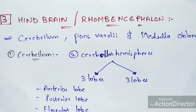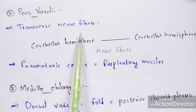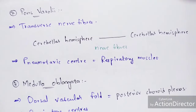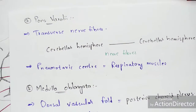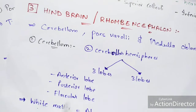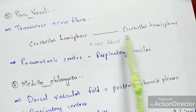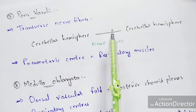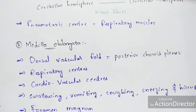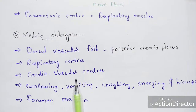The pons Varolii consists of transverse nerve fibers, which mainly help to connect each of the cerebellar hemispheres — the left and right cerebellar hemispheres. There is also a pneumotaxic center in the pons Varolii, which mainly helps in the functioning of the respiratory muscles by receiving signals from them.